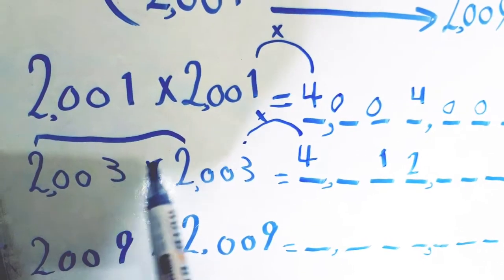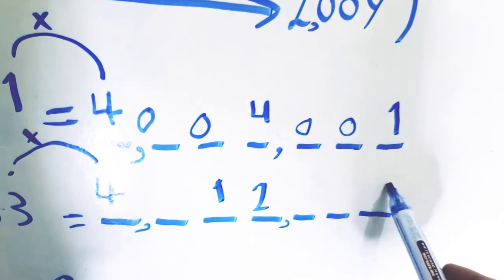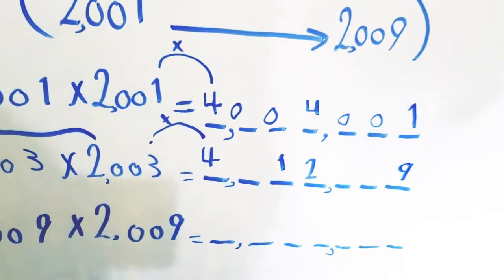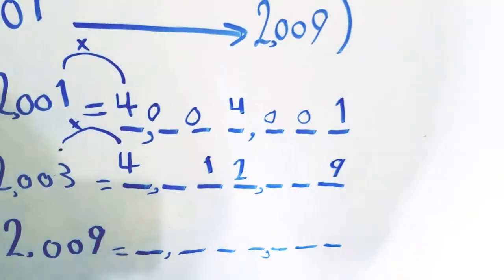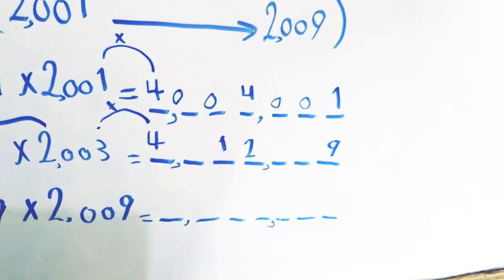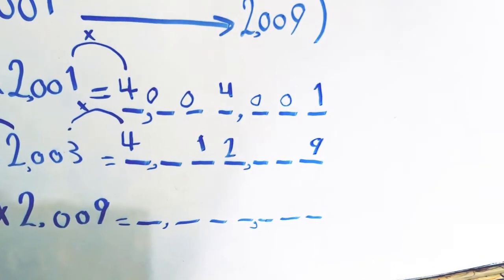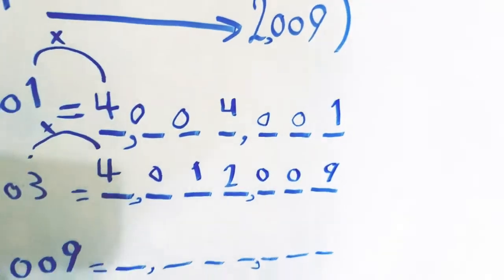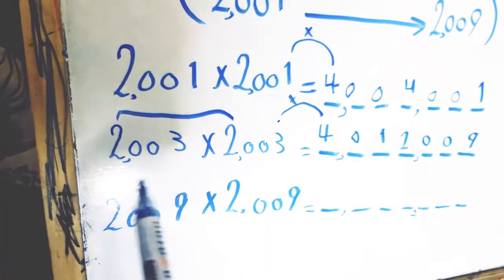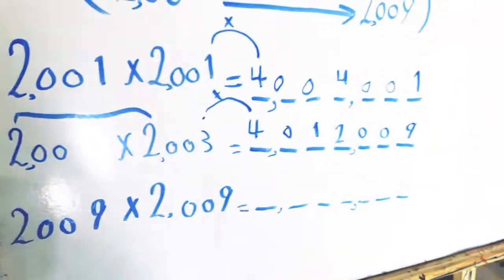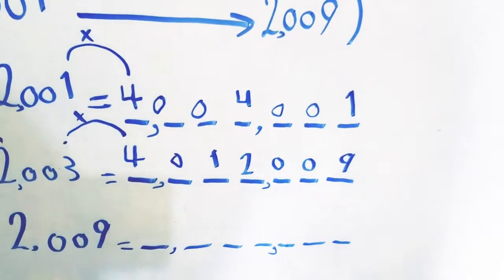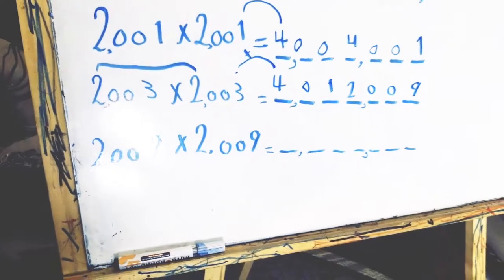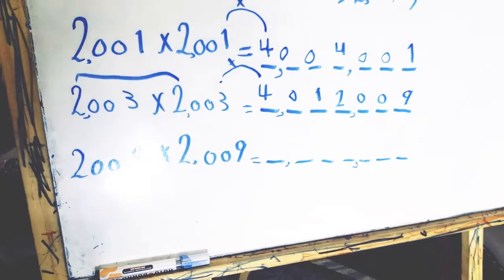The last step: we multiply the last digit by itself, so 3 times 3 equals 9. The product must contain seven digits; here we have four digits, so the missing digits are replaced by zero. The multiplication product of 2003 times 2003 equals four million, twelve thousand and nine.